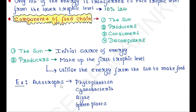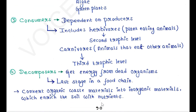Autotrophs include phytoplankton, cyanobacteria, algae, green plants, etc. Next are consumers — they are dependent on producers. They include herbivores and carnivores. Herbivores are plant-eating animals and they are the second trophic level. Carnivores are animals that eat other animals and they are the third trophic level.